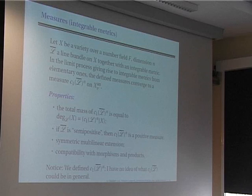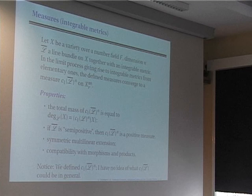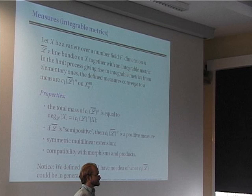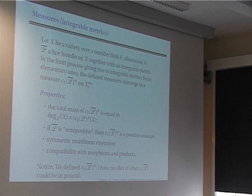This works for elementary metrics. For integrable or arbitrary metrics you have to go through the limit process: take elementary metrics converging to your metric and verify that the discrete measures converge to something independent of any choice. Again, it is positivity that makes the thing work — you can find positivity everywhere.